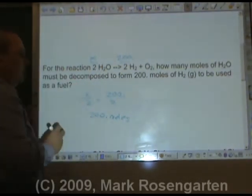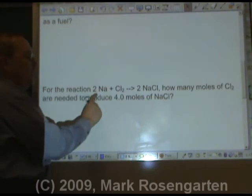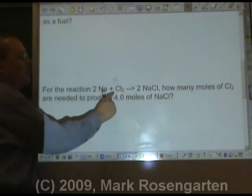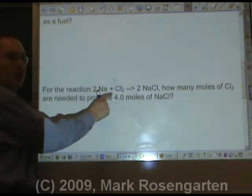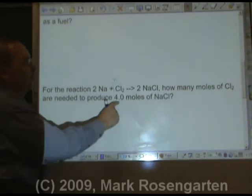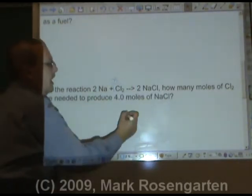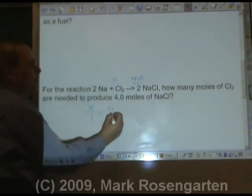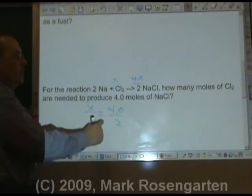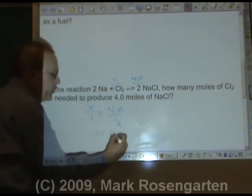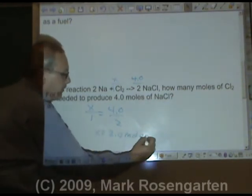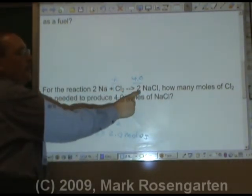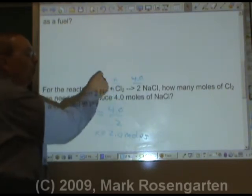For the reaction 2Na plus Cl₂ forms 2NaCl, how many moles of Cl₂ are needed to produce 4.0 moles of NaCl? X over one equals 4.0 over two. Four divided by two, X equals 2.0 moles. And that makes sense because being a one to two ratio, whatever sodium chloride is, the chlorine will be half that amount. Half of four is two.